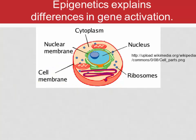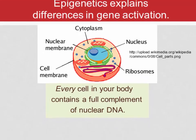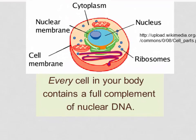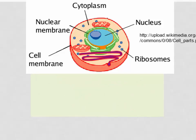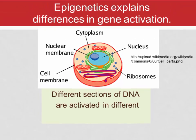Epigenetics is often explained in terms of differences in gene activation. Every cell in your body has a full complement of nuclear DNA — both brain cells and liver cells. Why do they differ? Because different sections of DNA are activated in different kinds of cells.